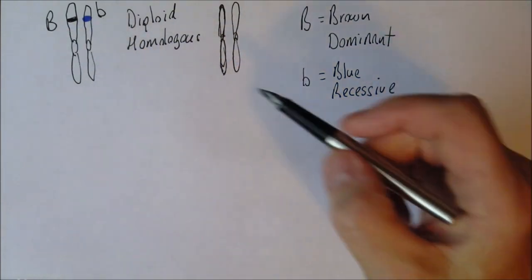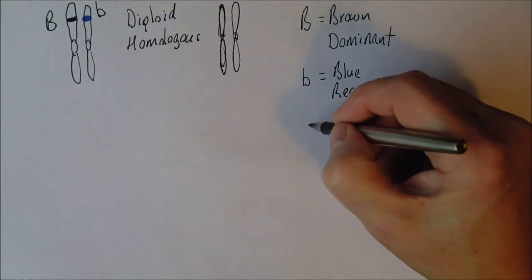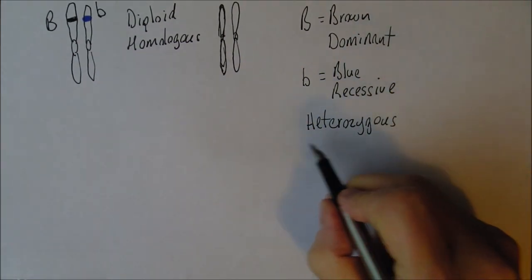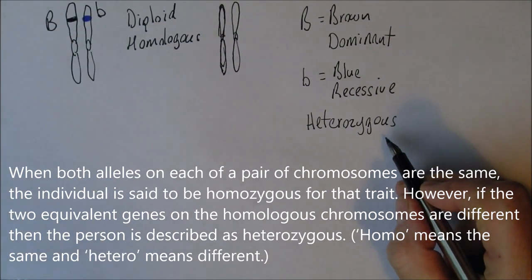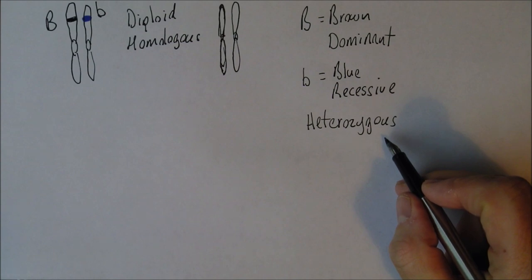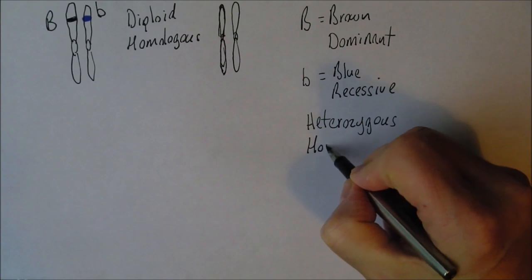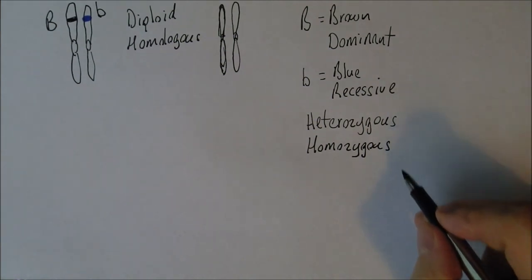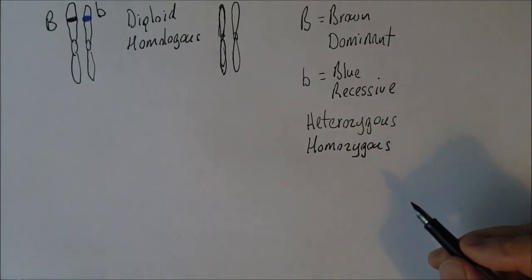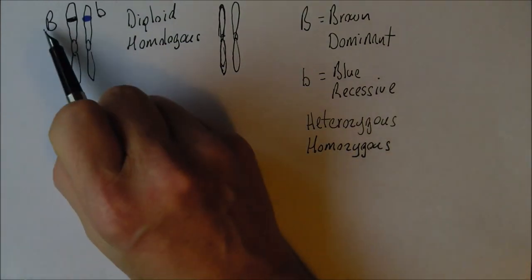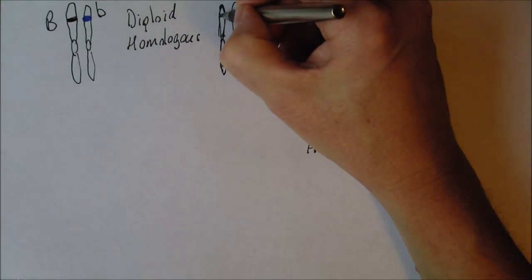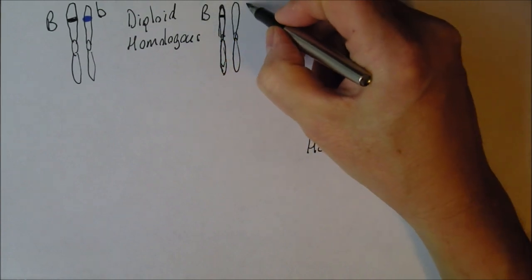So we see the two genes are different, meaning this potential mother is heterozygous. Heterozygous means that the two genes are different — there are two different alleles, two different forms of the gene present. If they were the same, we would say she was homozygous. Homozygous means the two genes are the same. Now this potential dad — let's presume he's the same: he's got a gene for brown eyes and a gene for blue eyes.